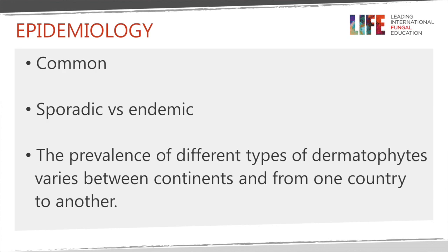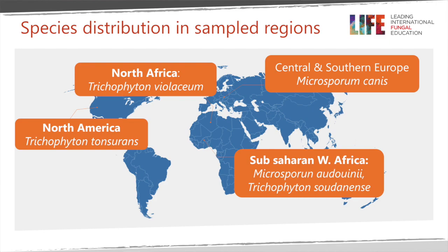Tinea infections are really common, occurring either sporadically in outbreaks or endemically in some areas, especially in the tropical regions. The prevalence of different dermatophyte types varies from continent to continent and country to country. Looking at a few sampled regions: in parts of North Africa it is Trichophyton violaceum; in North America, Trichophyton tonsurans; in Central and Southern Europe, Microsporum canis; while in Sub-Saharan West Africa you get Microsporum audouinii and Trichophyton sudanense.